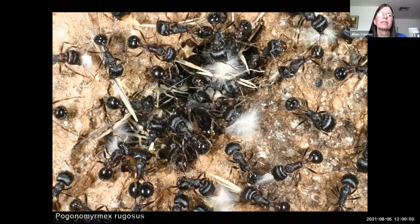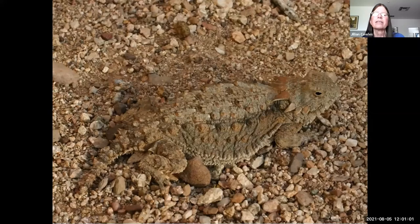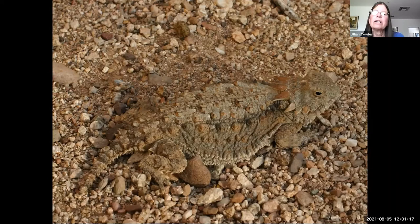Harvester ants are also commonly seen gathering plant materials, frequently seeds of grasses. They aerate the soil and deposit a lot of organic material underground where it doesn't get oxidized. One beneficiary of harvester ants is our horned lizard, which feeds almost exclusively on Pogonomyrmex ants. There's another trophic level that cycles between the horned lizard and the harvester ants: a specialized tapeworm whose life cycle cycles exclusively between this horned lizard and harvester ants.